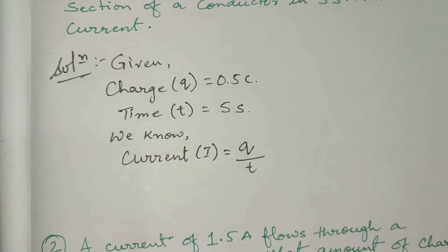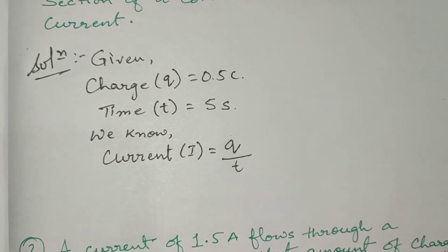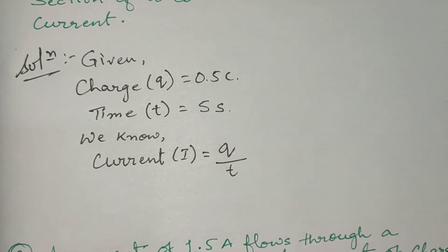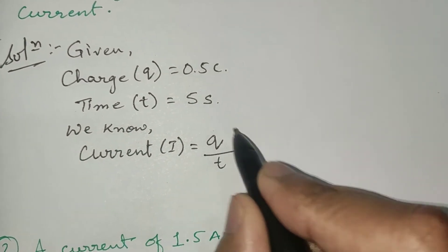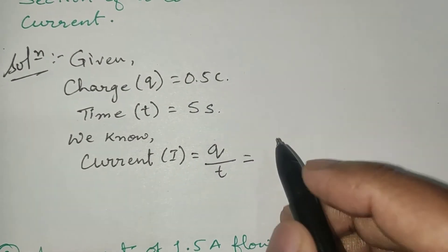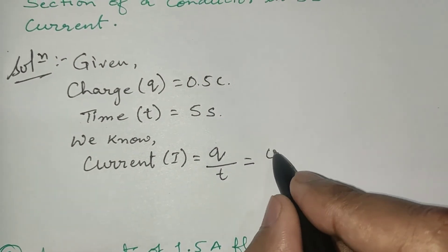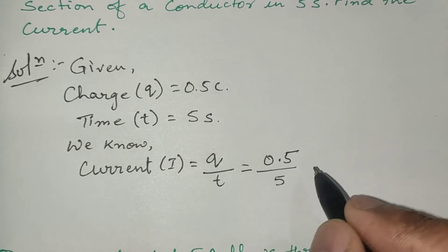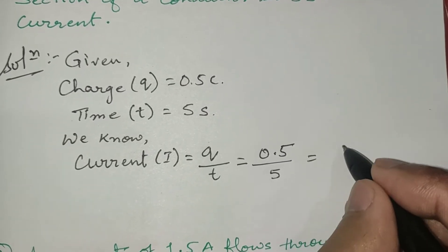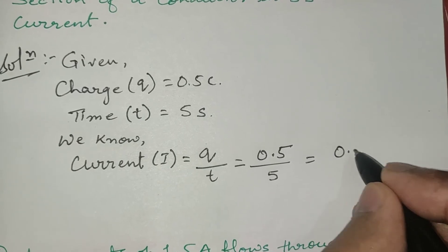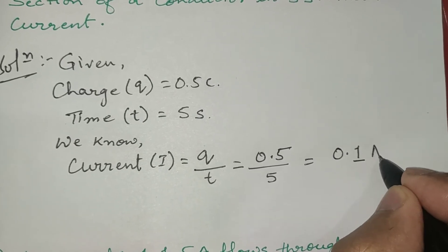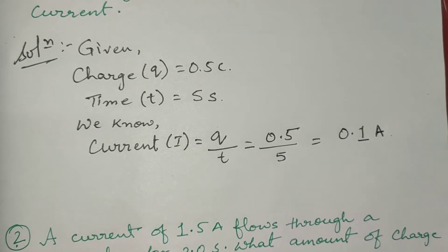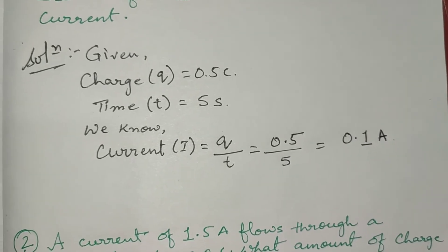We write the formula. We know that current is equal to Q upon T, that is charge upon time. So the charge value is 0.5 divided by time, which is 5. If we divide we get 0.1 ampere. So the answer is 0.1 ampere.